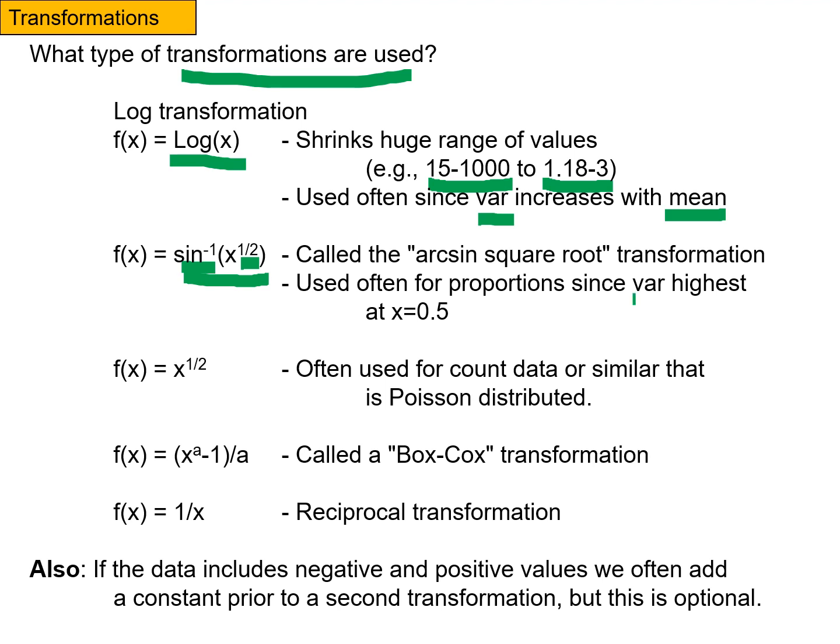This is often used for proportions because as you'll remember, the variance of proportions or frequencies is usually the highest at 0.5. This transformation equalizes variances across different proportions. The square root transformation is fairly commonly used if we have count data or data that might be Poisson distributed. It'll take that long right tail and bring it in to make things more normally distributed.